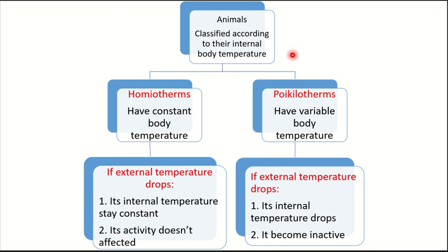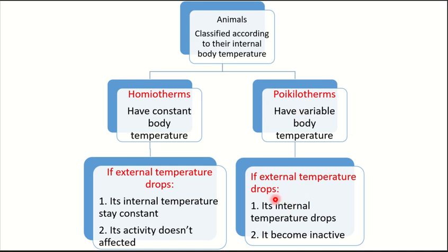As a summary, animals are classified according to their internal body temperature into homeotherms, which have a constant body temperature, and poikilotherms, which have a variable body temperature. In homeotherms, if the external temperature drops, their internal temperature stays constant and their activity is unaffected. While in poikilotherms, if the external temperature drops, their internal temperature drops as well and the animal becomes inactive.